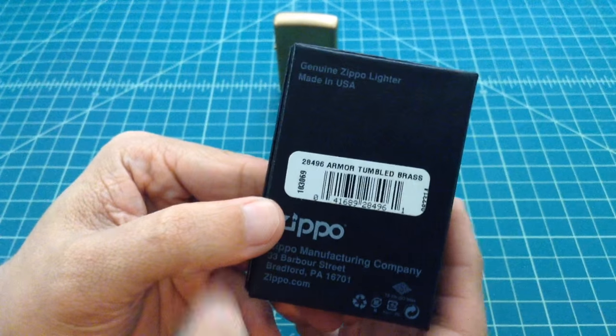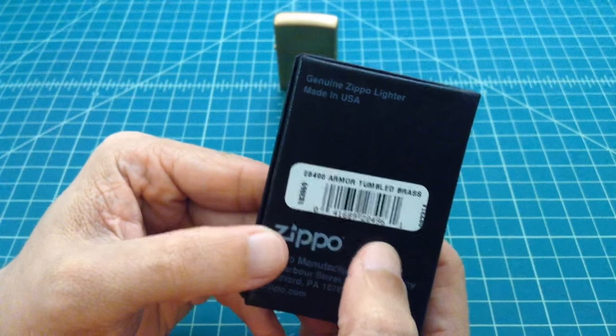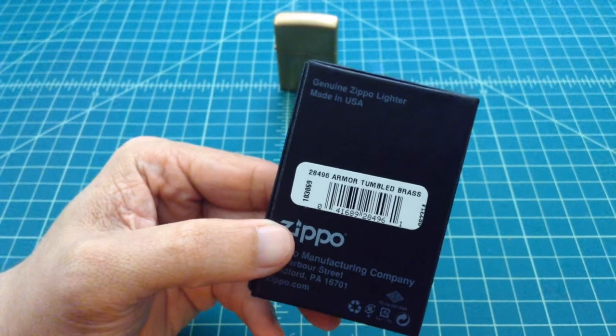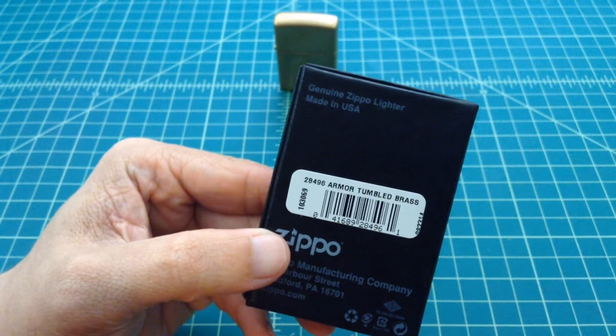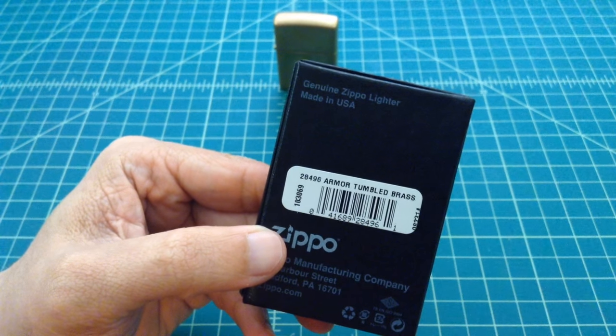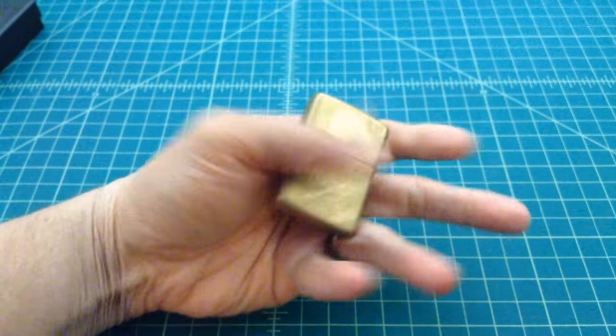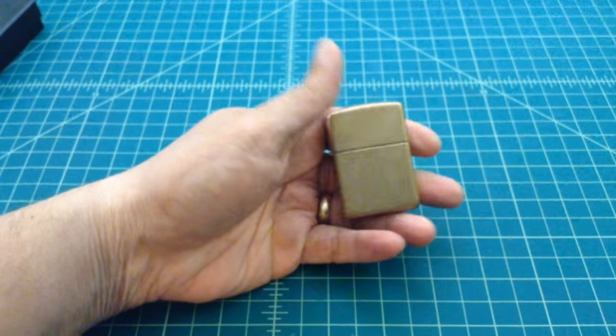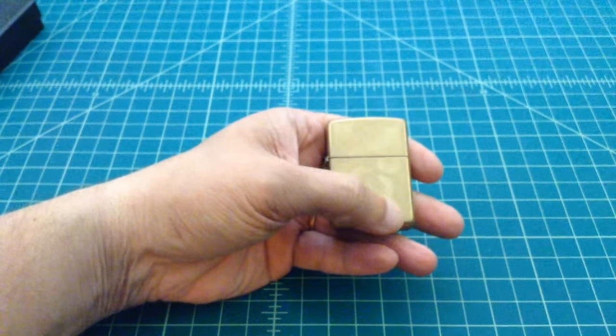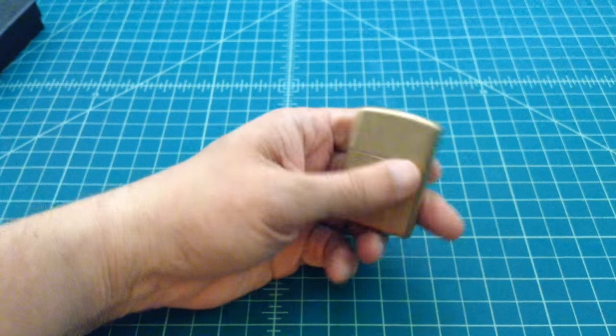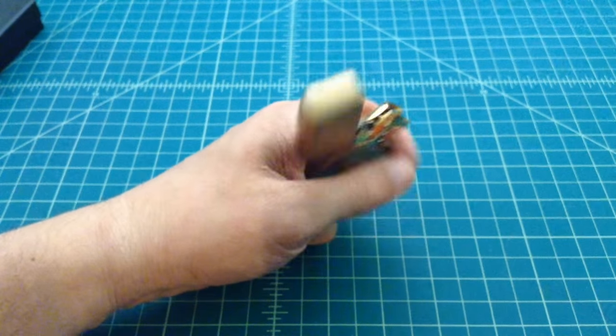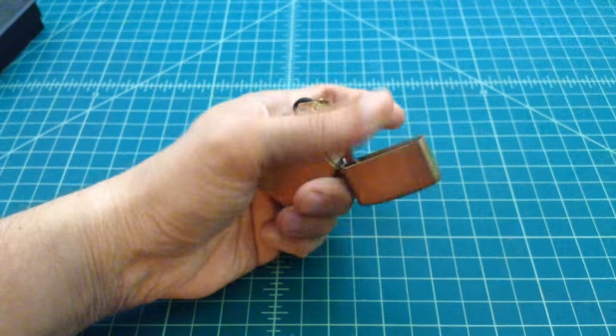I don't know if this number has any significance. I bought this off of Amazon, like I said it was around 15 bucks, and it's the armor tumbled brass is what they're calling it. So I wanted to go ahead and show that to you. Hopefully this discoloration—this might have been just from the fuel, but hopefully that'll take care of itself in the future moving forward.